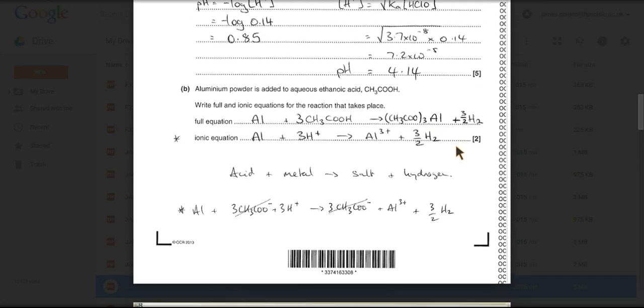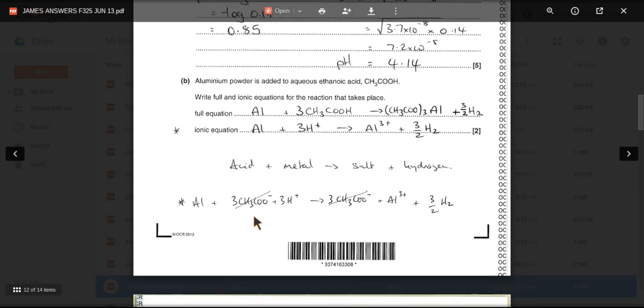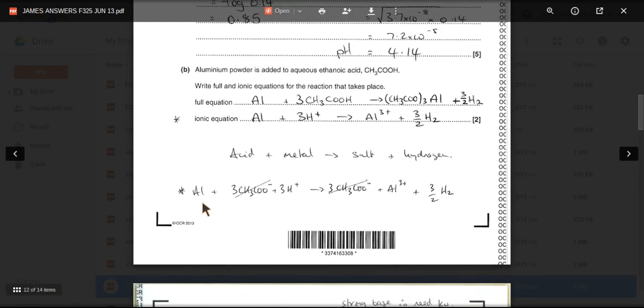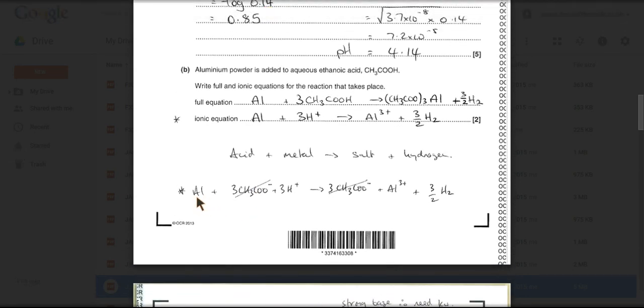The ionic equation, I'll just explain the solution for that one. We've got to turn things into ions if we can. Aluminium, the metal, can't do that into ions. The acid, we can, so we've got 3 ethanoate ions and 3 H plus ions. The salt, we can. You can see the ions there. Hydrogen, we can't. And then we just cancel out like terms. And we're left with that.